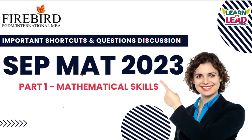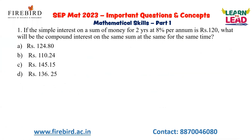In this video, we are going to discuss a few important questions based on the May MAT question paper. This was a question asked in the May MAT held recently: If the simple interest on a sum of money for two years at 8% per annum is 120, what will be the compound interest on the same sum at the same rate for the same time?